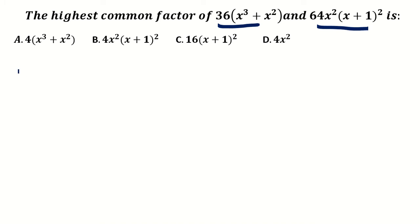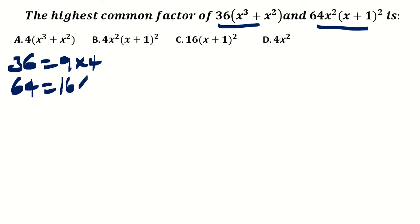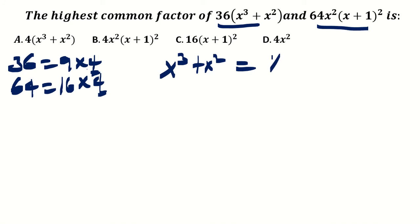First of all, observe the number 36 — it's the same as 9 times 4. And 64 can be expressed as 16 times 4. The 4 will be common in both, so 4 will be taken out as a common factor. Then observe the variable expression, which is x³ plus x². It can be written as x² times x plus x² times 1.